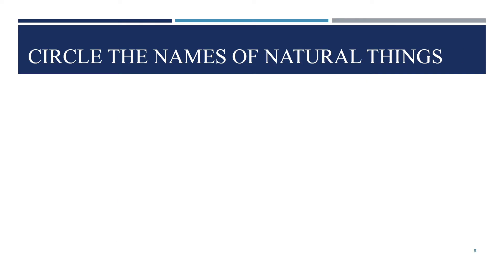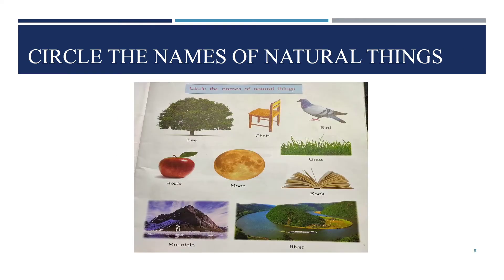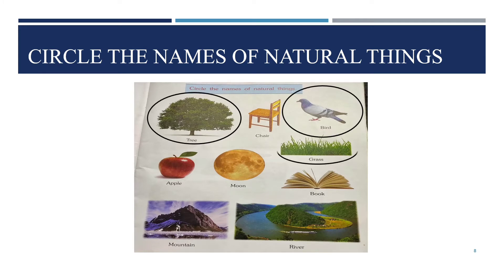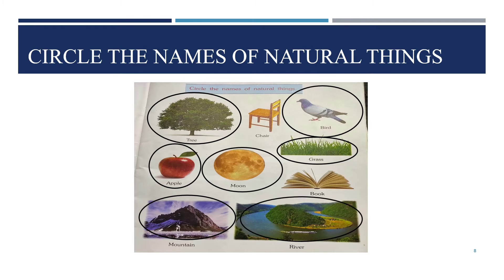Now natural things — we also did this exercise in the previous lecture. Tree, bird, grass, moon, apple, mountain, river — these are natural things. The remaining chair and book are man-made things because they are made by man. But tree, bird, grass, moon, apple, mountain, river — these all freely occur on our earth and exist on our earth, so we call them natural things.